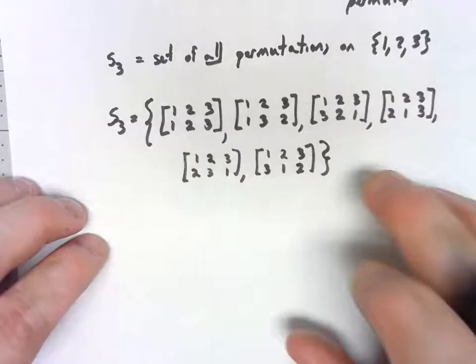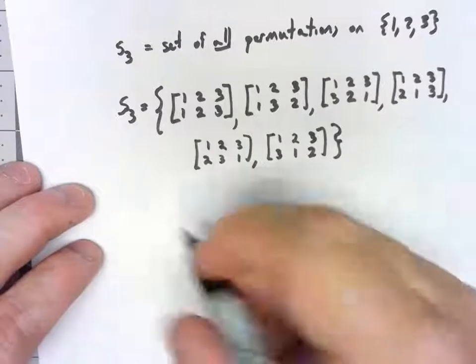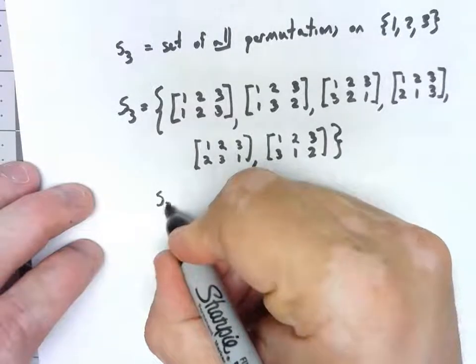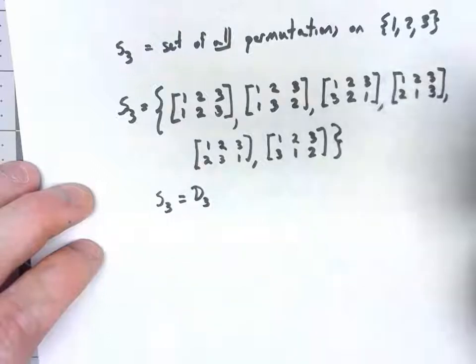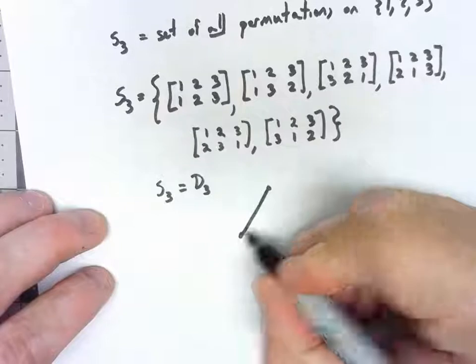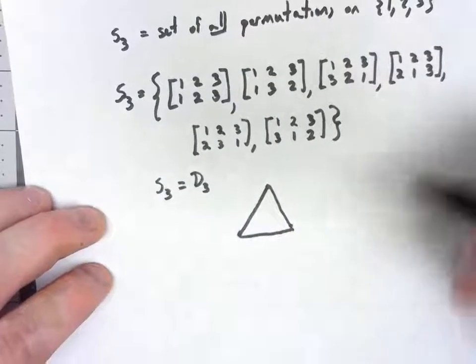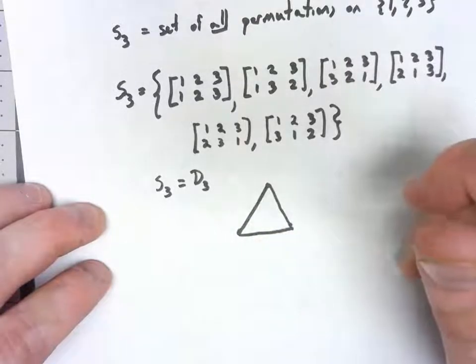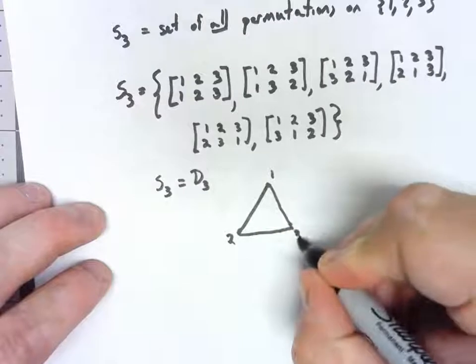Now what's interesting about this group, what's interesting about S3, is that actually S3 is basically the same as D3. Because if we think about those symmetries of the triangle, when we looked at it before, we kind of did colors for the different vertices, but what if I labeled them just 1, 2, and 3?